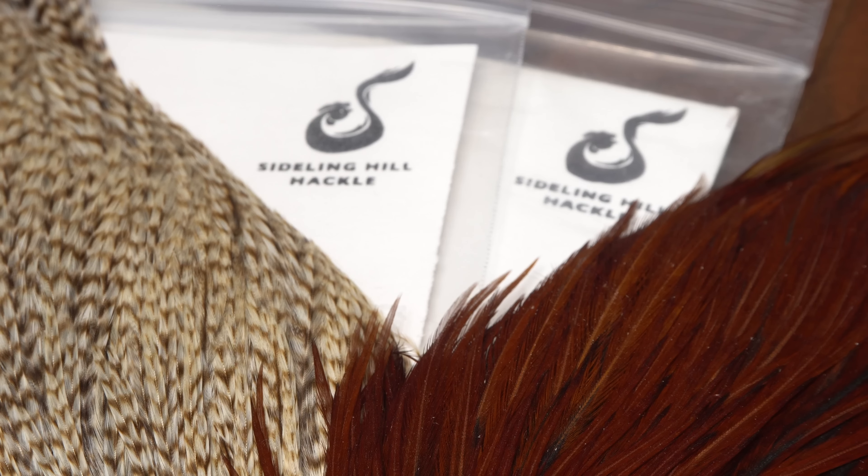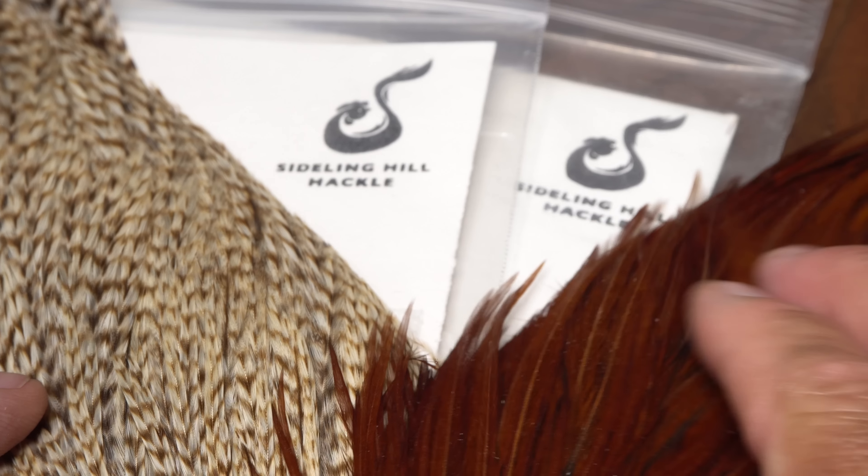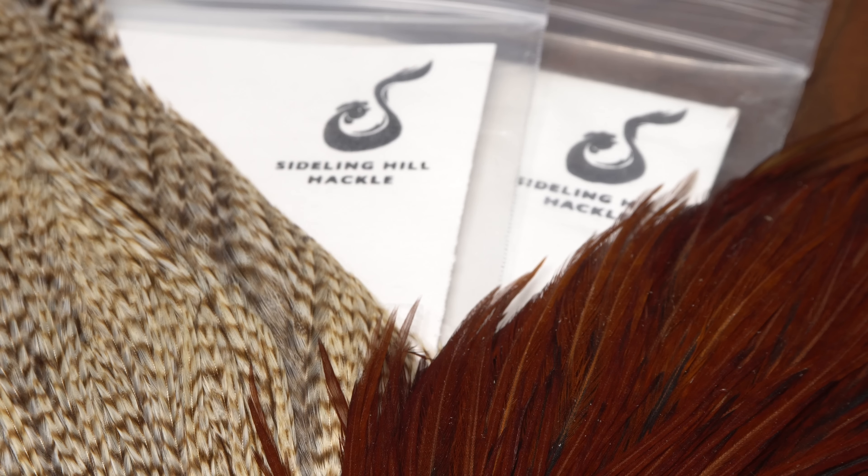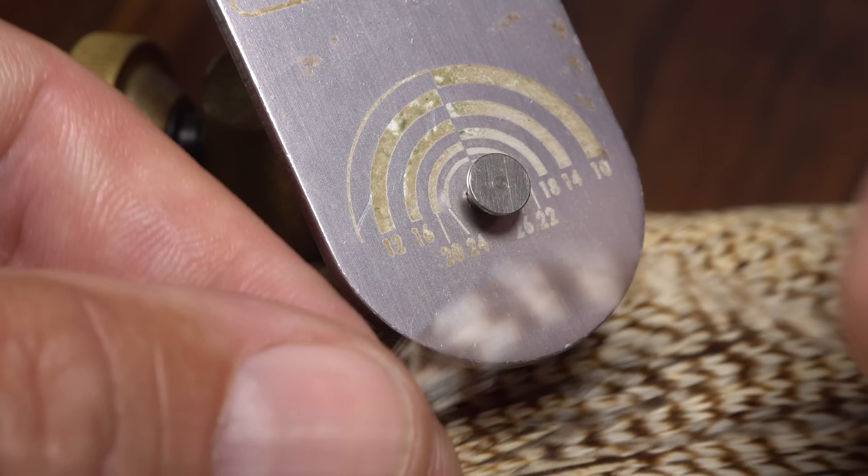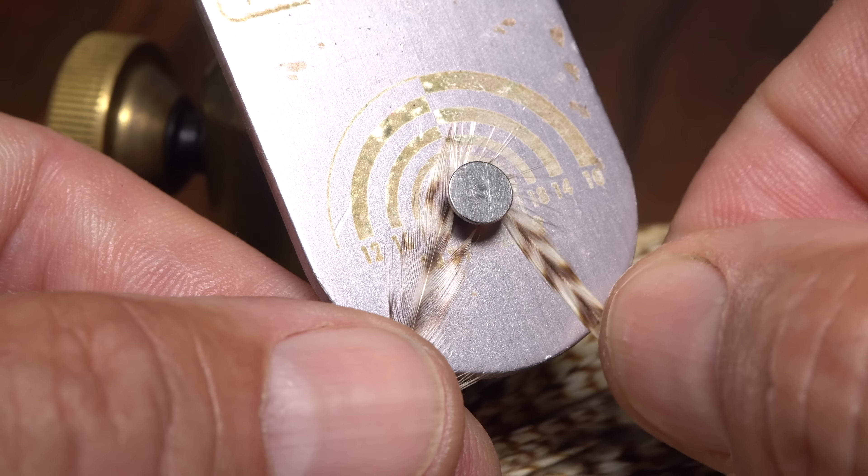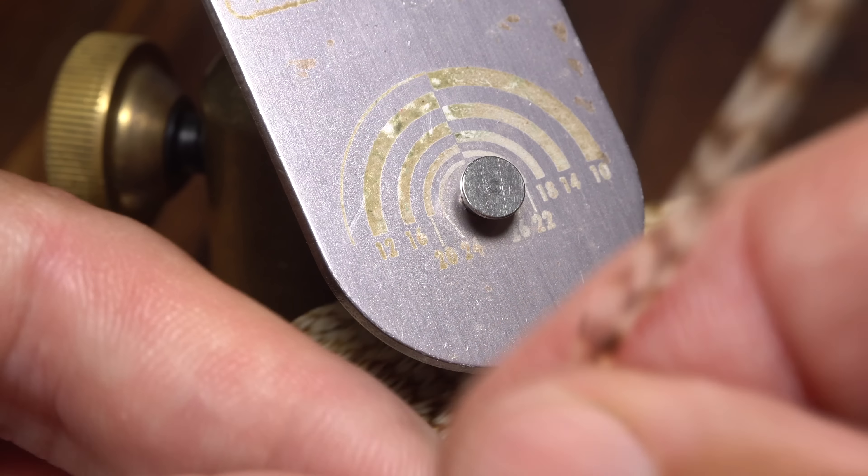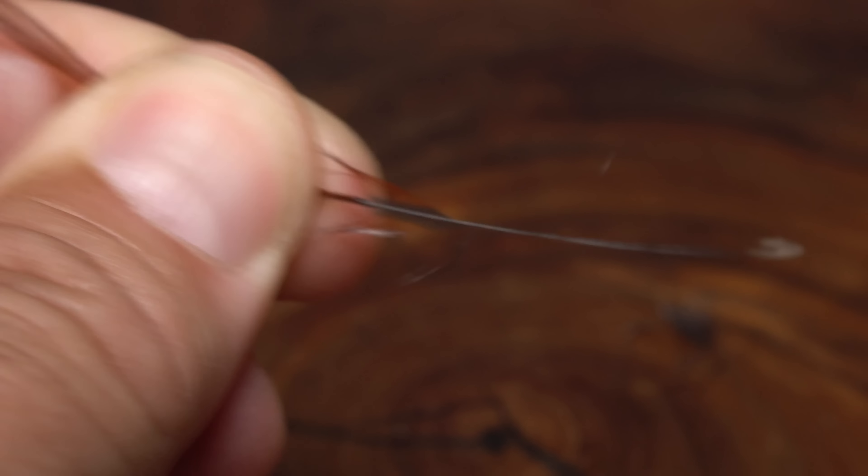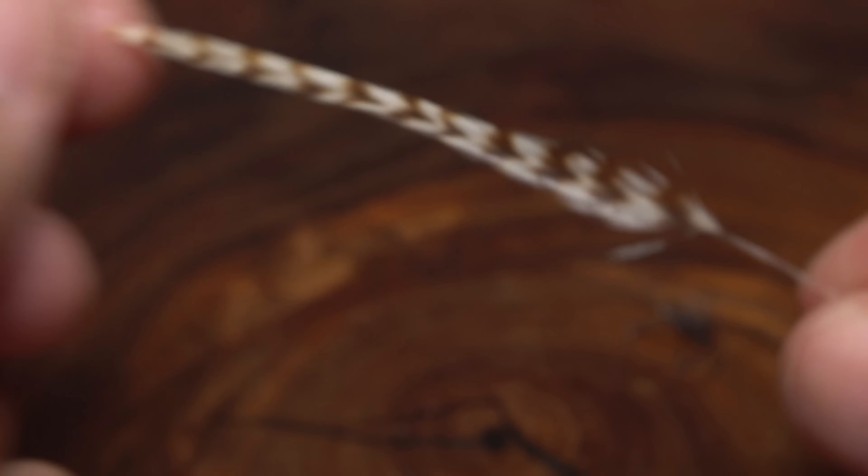I like to use two different hackle feathers to hackle the fly, one brown and one ginger grizzly. To me the combination looks just plain yummy. Be sure to measure each feather to confirm that it's the correct size before plucking it free from the skin. Pull down and strip off all the lower webby fibers from the stems of both feathers.